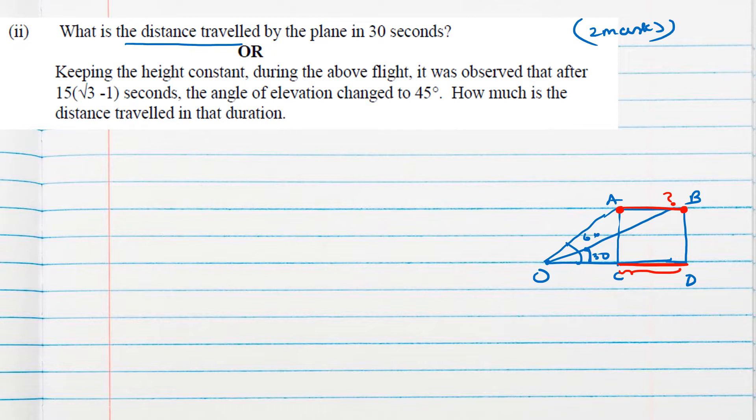If we apply trigonometric concept in this triangle, we can find OC length. Considering triangle OAC with this 60 degree angle and height given as 3000√3, we include opposite height and adjacent side. For opposite and adjacent, we need tan ratio. So tan 60° = AC/OC. Tan 60° is √3, AC is 3000√3, so √3 cancels and OC is 3000 meters.